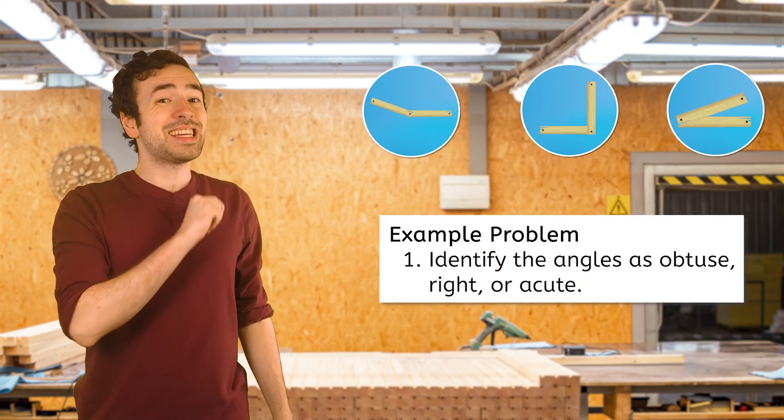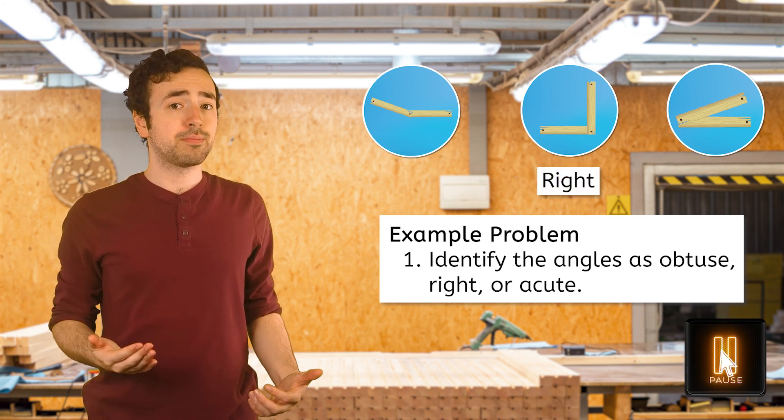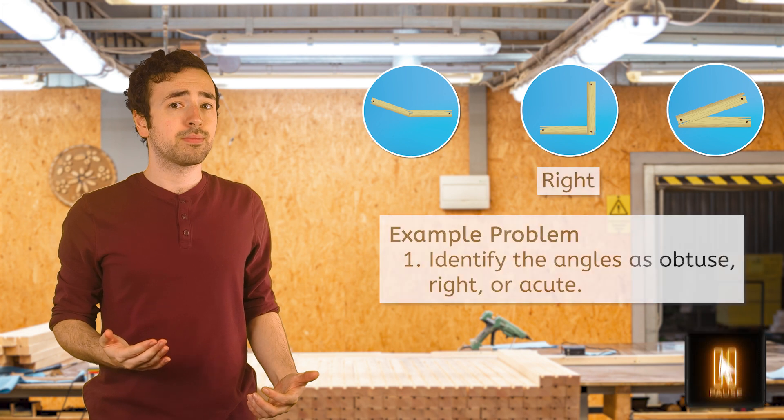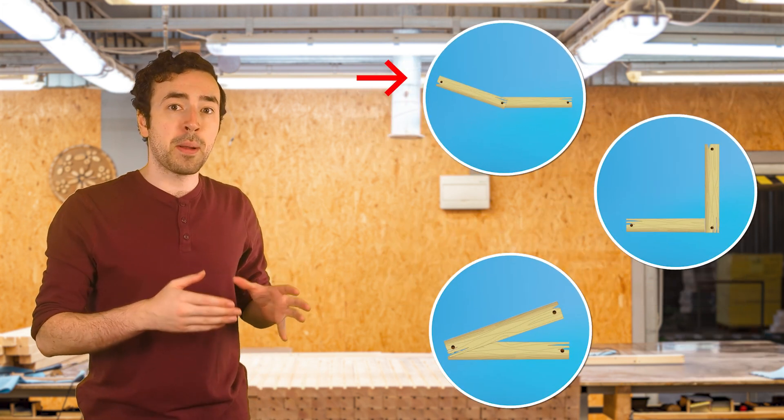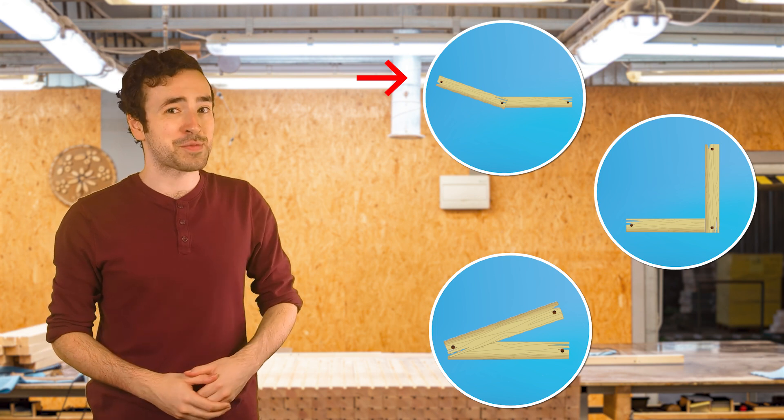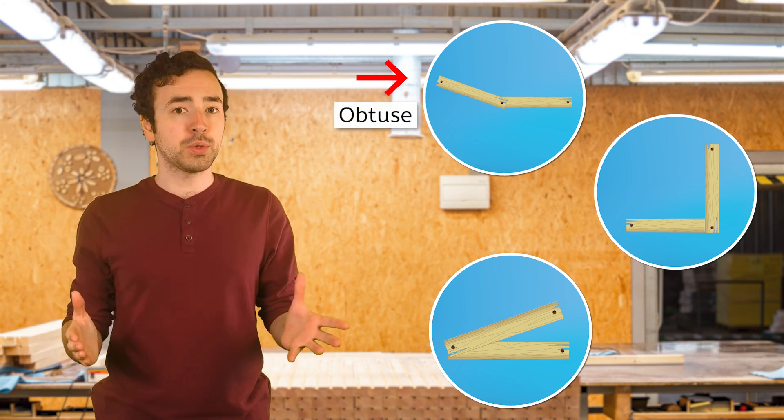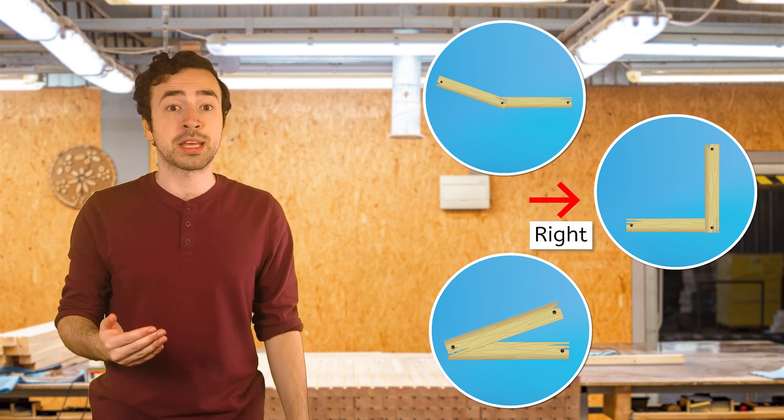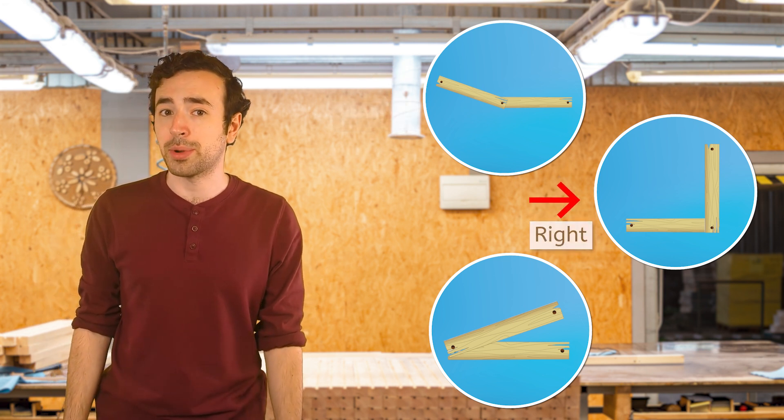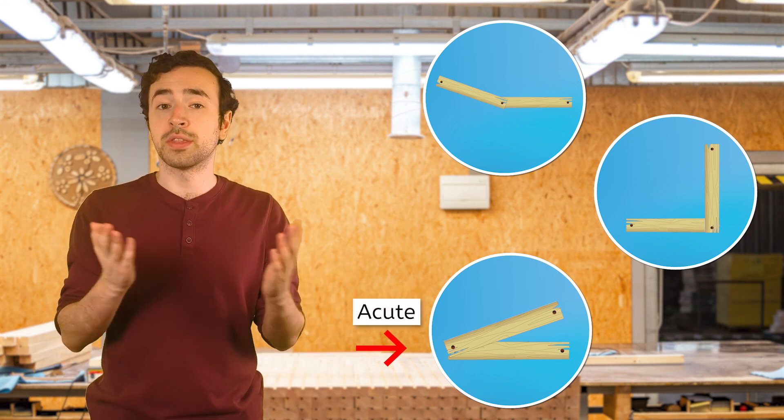Okay, now your turn. Can you identify these angles as obtuse, right, or acute? Well, this first angle is open much bigger than the angle on the corner of my paper. If it's bigger, it's obtuse, since obtuse means greater than 90 degrees. This middle angle is right because it perfectly matches a corner of my paper, and the last angle is acute because it's smaller than a right angle.